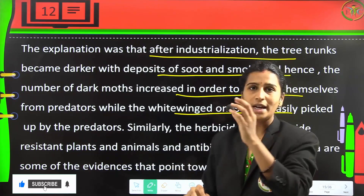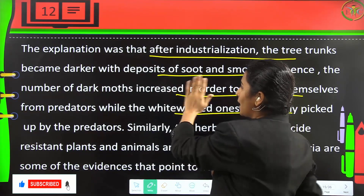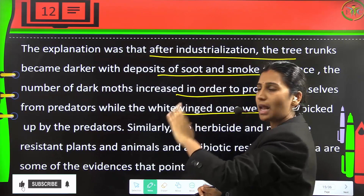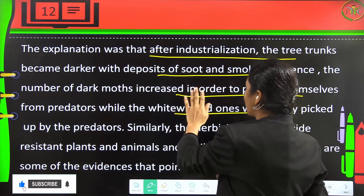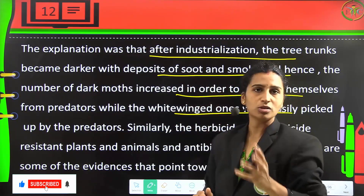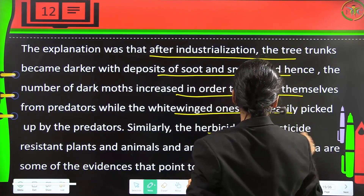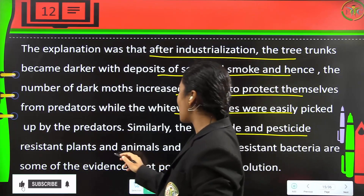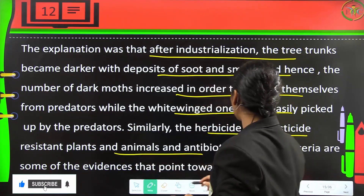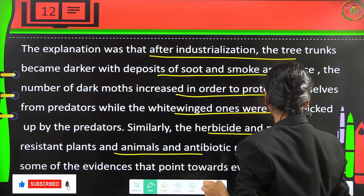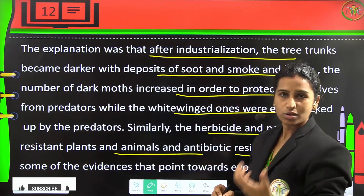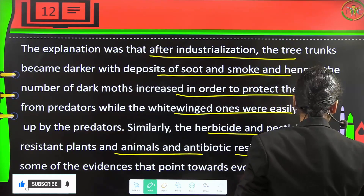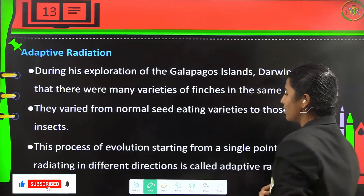When the white moth was on a black branch it was easily picked up, but when a black moth was on a black branch it was not visible. Similarly, herbicide and pesticide-resistant plants and animals, and antibiotic-resistant bacteria, are also evidences that prove evolution.